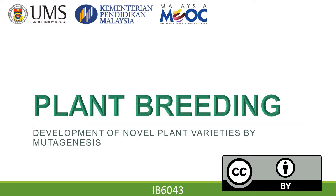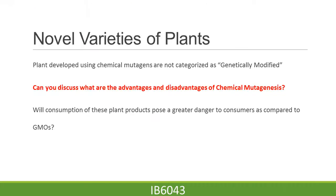Today's lecture will focus on plant breeding and a specific aspect which is the development of novel plant varieties by mutagenesis. One of the major aspects of plant breeding using chemical mutagenesis is that plants developed using chemical mutagenesis are not categorized as genetically modified.